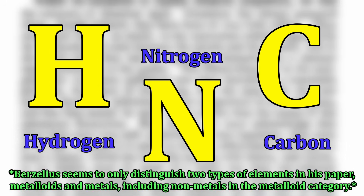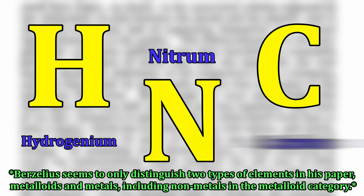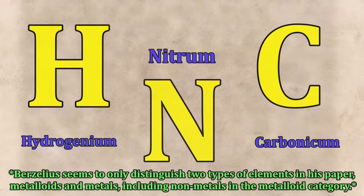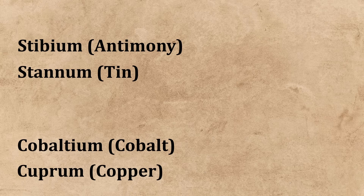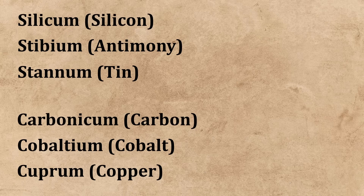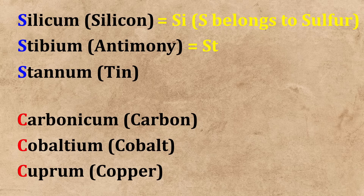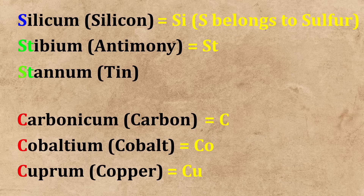In this new system, he starts with metalloids, assigning them the first letter of their Latin name. He then moves on to metals, employing the same rule as that for metalloids, with a few exceptions. If a metal has the same initial letter as a metalloid or as a previously named metal, then its symbol becomes the first two letters of its Latin word. Then, if a metal has the same first two letters as a metalloid or metal named before it, its symbol will be the first letter and the first consonant that the two similarly named elements do not have in common.